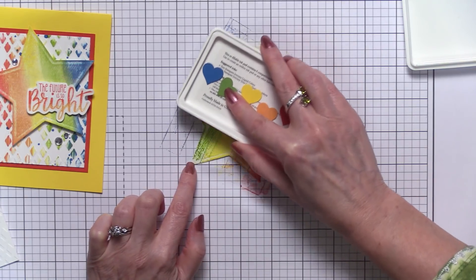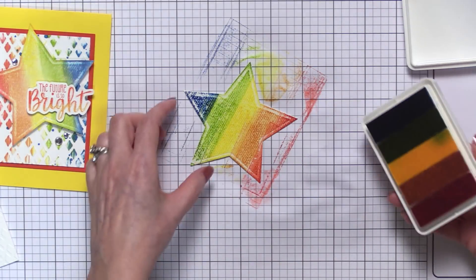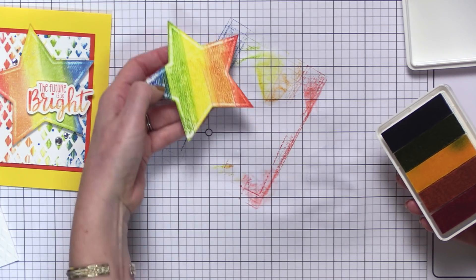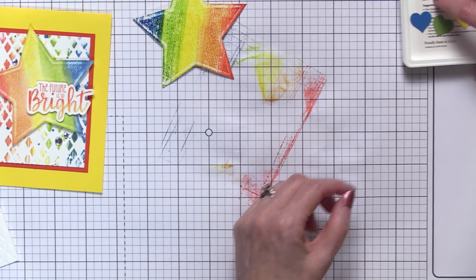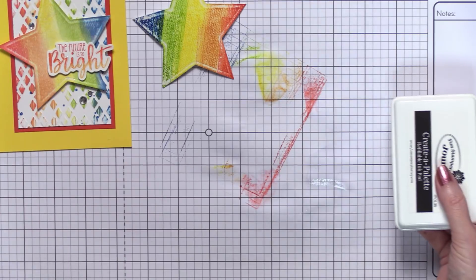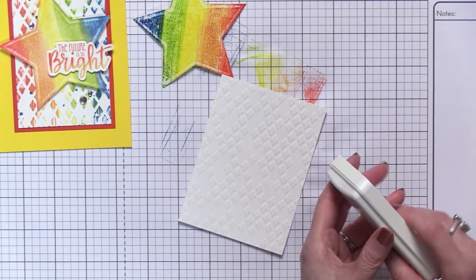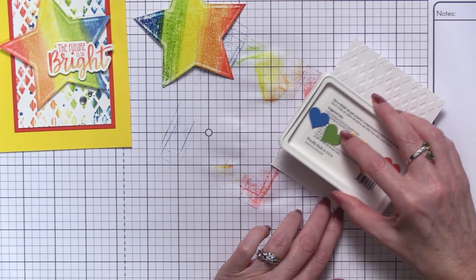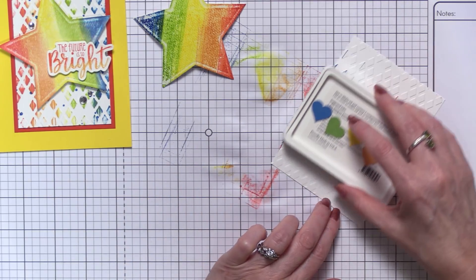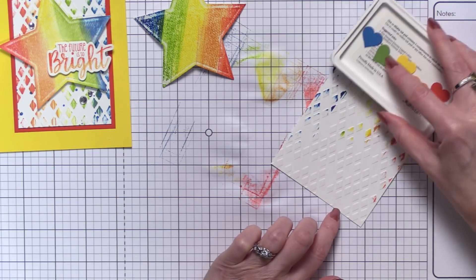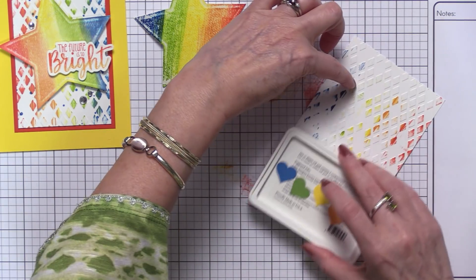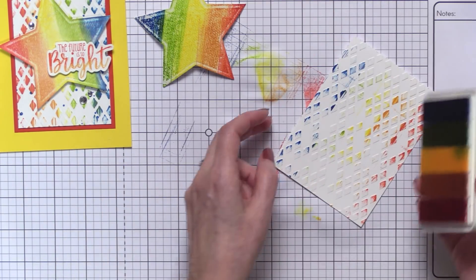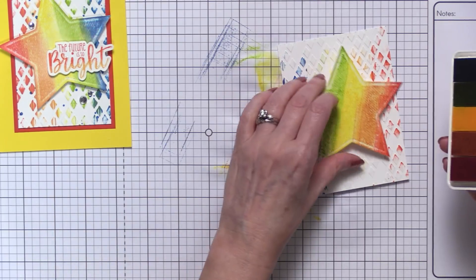And then you can just take your stamp pad and go directly onto the star just like this. Now make sure you're kind of moving up in the same direction, and look how that turned out, really cool. And for the background, we just took the same ink pad and just lightly ran it over our embossed areas and came up with sort of a coordinating background for this star.